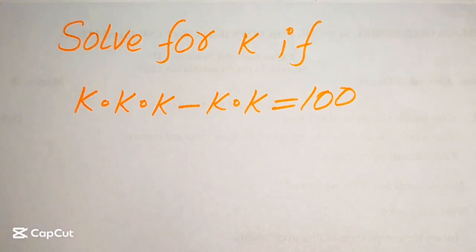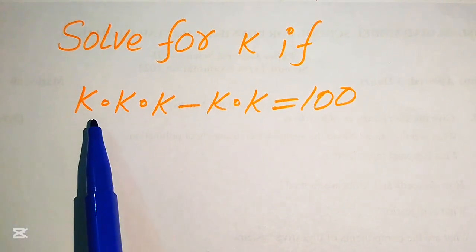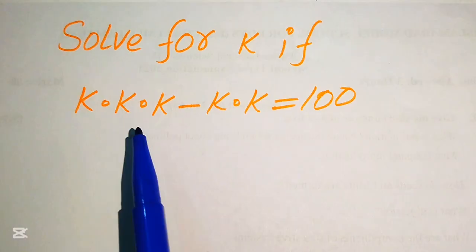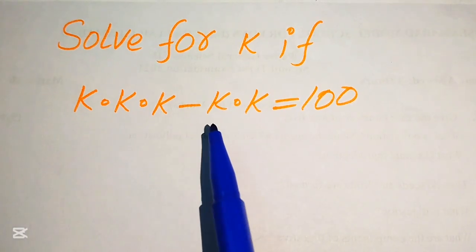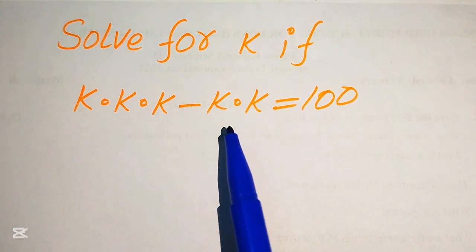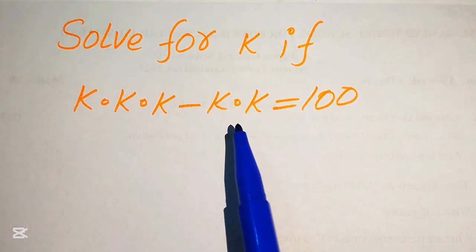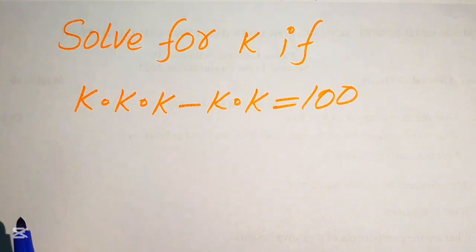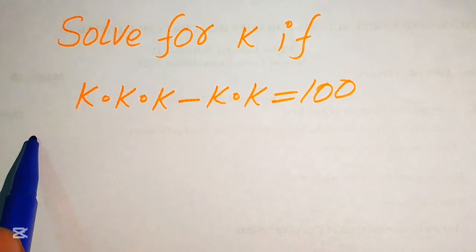Hello everyone, welcome to solve this nice math Olympiad algebra problem. Here we have k multiplied by k multiplied by k, minus k multiplied by k, equals 200, and we solve this problem for the values of k.